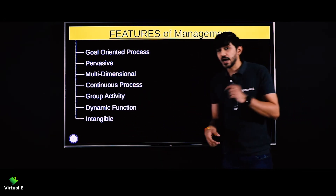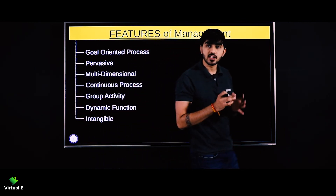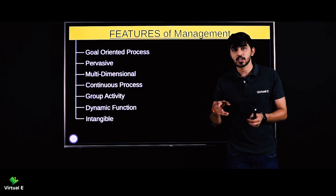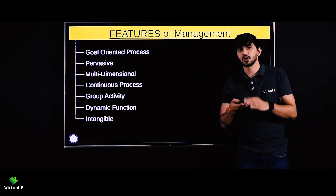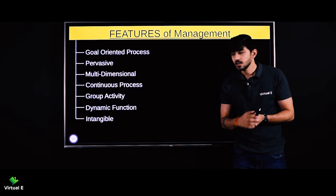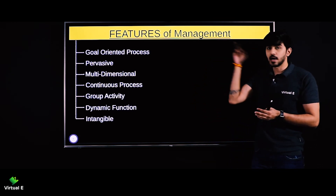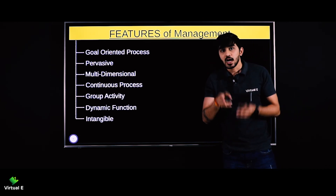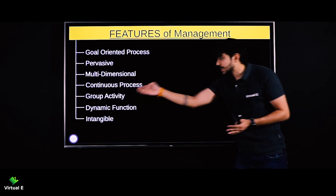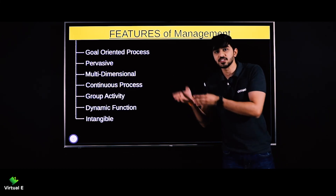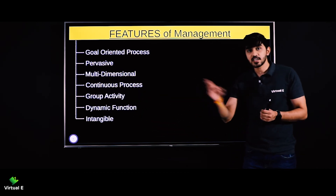Next is management is a dynamic function. Management depend karta hai on the business environment and the people — and all these things keep on changing. Environment kabhi fix nahi rehta. When I talk about environment it does not mean the atmosphere — it means the business environment: suppliers, producers, customers, government policies — these are your business environment. Environment never stays fixed, it keeps on changing. So similarly your management keeps on changing. Management becomes a dynamic function — something that keeps on changing and adapting with the environment.